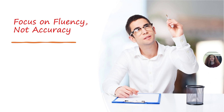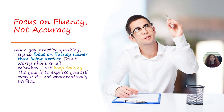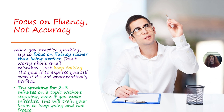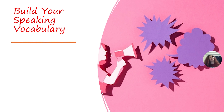The fourth way is to focus on fluency, not accuracy. When you practice speaking, try to focus on fluency rather than being perfect. Don't worry about small mistakes — just keep talking. The goal is to express yourself even if it's not grammatically perfect. Even native English speakers make mistakes, so try speaking for two or three minutes on a topic without stopping. This will train your brain to keep going and not freeze.